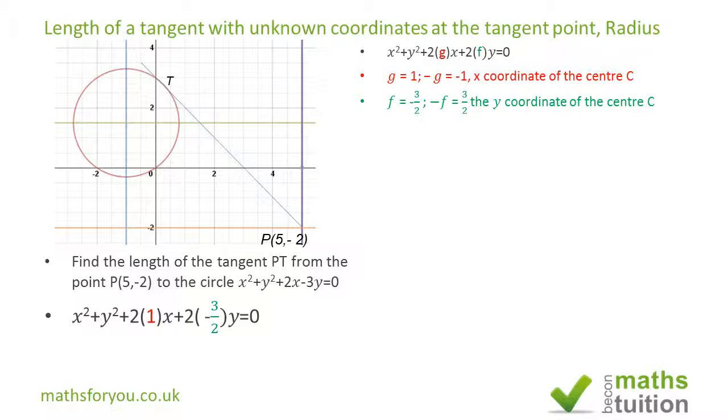Now PT² is shown here. The bit in brown is the value of PC² (the hypotenuse of the right-angle triangle), and this bit here is the radius squared.